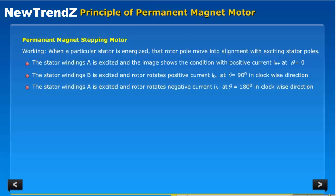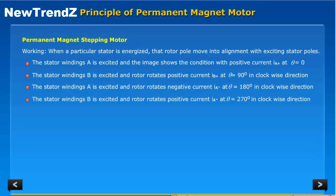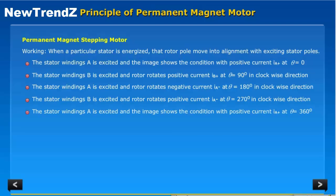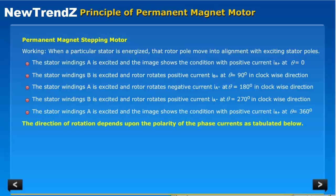Stator winding B is excited and the rotor rotates with negative current IA at theta equal to 180 degrees in the clockwise direction. Stator winding B is again excited and the rotor rotates with negative current IA at theta equal to 270 degrees in the clockwise direction. Stator winding A is then excited, showing the condition with positive current IA positive at theta equal to 360 degrees. The direction of rotation depends upon the polarity of the phase current, as tabulated.